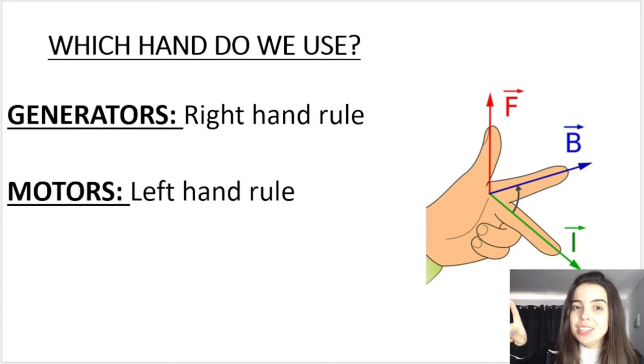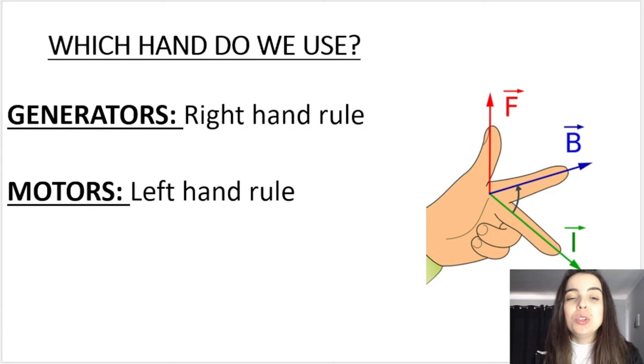We need to use our hands. I've summarized over here that if you are dealing with a generator, you use your right hand. It's called the right hand rule. If you're dealing with a motor, you use your left hand. It's called the left hand rule. The fingers mean the same thing whether you're working with a motor or a generator, and I will go through this in the next video.